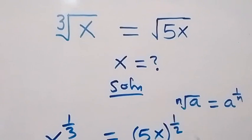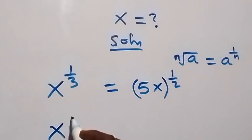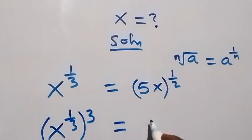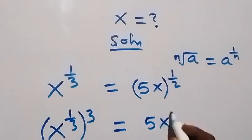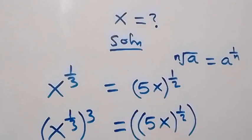Then from here, let's take the power of 3 on both sides — that is, raise both sides to power 3. We have x raised to power 1 over 3, then raised to power 3, and also here we have 5x raised to power 1 over 2, then raised to power 3.